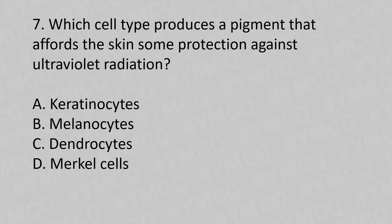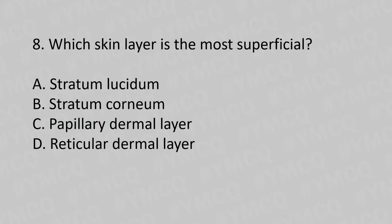Question 7: Which cell type produces a pigment that affords the skin some protection against ultraviolet radiation? Option A: keratinocytes. Option B: melanocytes. Option C: dermocytes. Option D: mucosal cells. The answer is Option B: melanocytes.